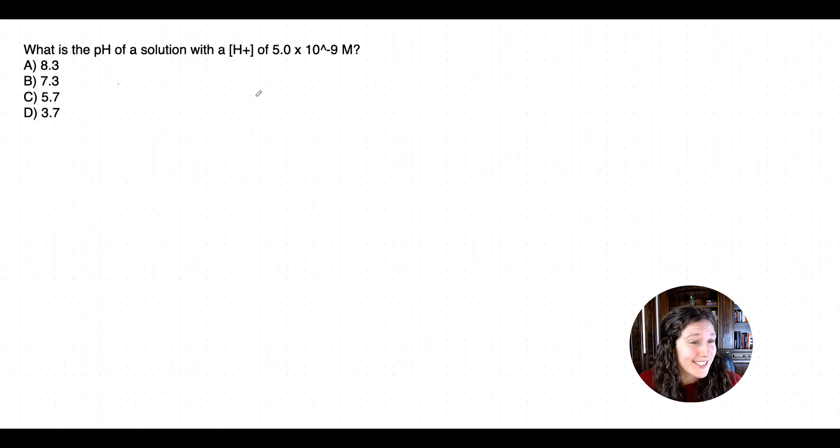As you can see, this is a more complicated question because we have a pH with an H plus concentration of 5 times 10 to the negative 9. This number, which is known as our mantissa, the number in the front of the exponent, is not 1. Remember in our last video, we talked about how if our mantissa is 1, we can just ignore it and do our logarithmic calculations just with the exponential number. Now we have to actually deal with a non-1 mantissa.